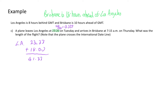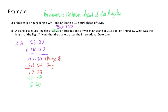Because 41.33 is above 24, that indicates a change of day. To adjust, I subtract 24 to get back below 24: 41 minus 24 equals 17, so 17.33. Converting back to 12-hour time, I subtract 12 from 17 to get 5, and multiply 0.33 by 60 to get 20 minutes back. Because originally it was 17, that indicates PM. So the plane departs Brisbane at 5:20pm, and because there has been a change of day and Brisbane is ahead, it's 5:20pm on Wednesday.